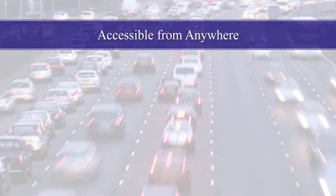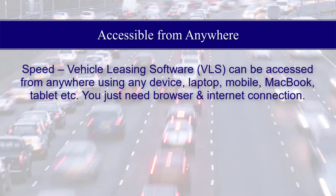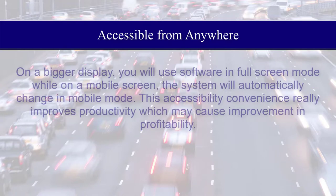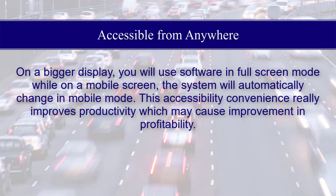Accessible from Anywhere. Speed Vehicle Leasing Software (VLS) can be accessed from anywhere using any device — laptop, mobile, MacBook, or tablet — you just need a browser and internet connection. On a larger display, you will use the software in full screen mode, while on a mobile screen the system will automatically switch to mobile mode. This accessibility convenience really improves productivity, which may cause improvement in profitability.